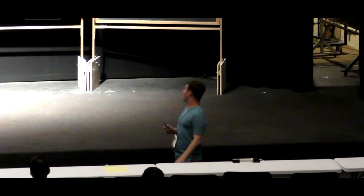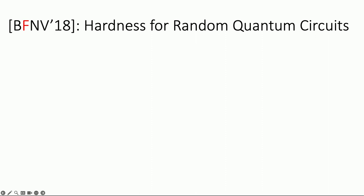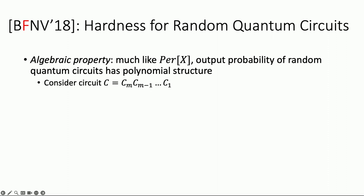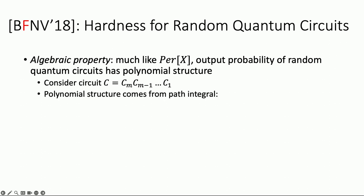So now, how do we adapt Lipton's argument from the permanent of a random matrix to the output probability of a random circuit? The permanent and the output probability of a random circuit have a lot of mathematical similarities — in particular, this polynomial structure. The output probability of a random quantum circuit has polynomial structure. You can see this by breaking up the circuit into its two-qubit gates C_m, C_{m-1}, and so on.